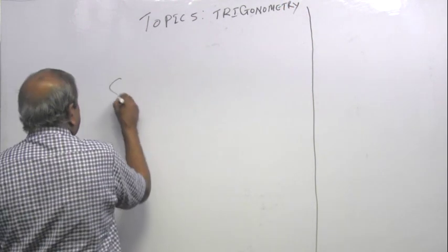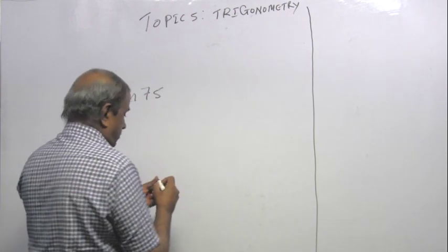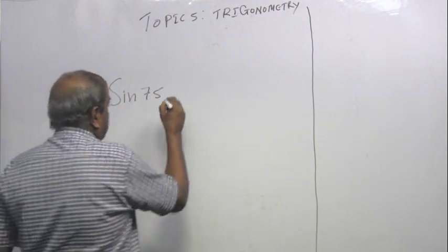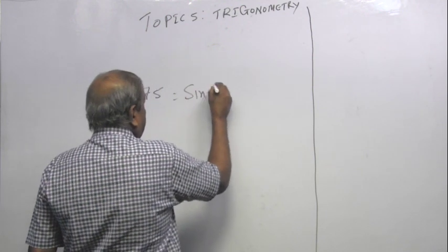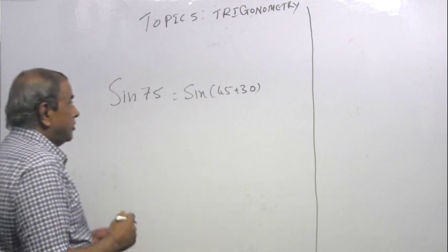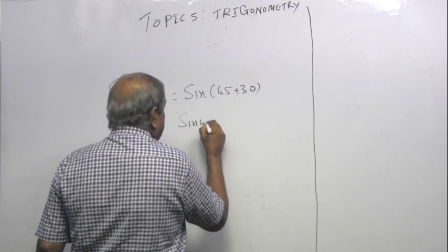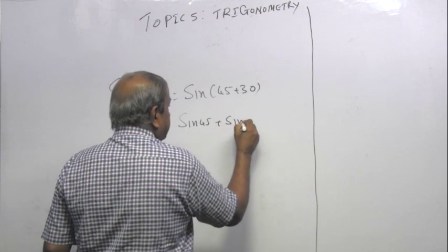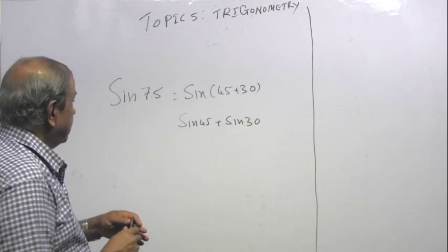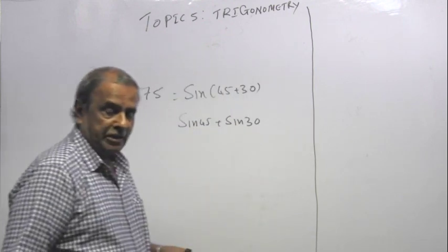So suppose I want to find sin 75. Some students will say that sin of 45 plus 30, I have seen this in students during year 13, they will do sin 45 plus sin 30. Let us look at the calculator.